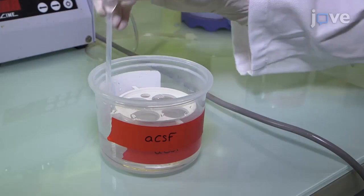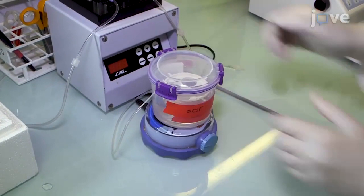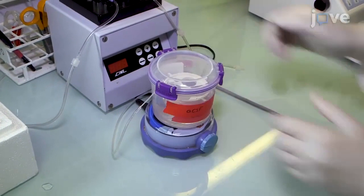Add a few millimeters of ACSF at the bottom of the food box, and start bubbling the fluid with carbogen. Then close the sealed box while maintaining constant carbogenation to create a humidified, 95% oxygen, 5% carbon dioxide rich interface chamber.